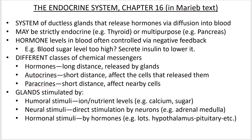Glands respond to several different stimuli. Humoral — don't get humoral and hormonal mixed up — humoral simply means chemicals found in your body fluids: ion levels, hydration status, electrolyte concentrations, stuff like that. Neural stimuli means direct stimulation — when you get scared or surprised, your brain directly stimulates your adrenal medulla, which then releases epinephrine and norepinephrine. And lastly, hormonal stimuli: hormones secreted by one gland can affect another gland, which secretes a hormone that can affect a third gland, and so on.